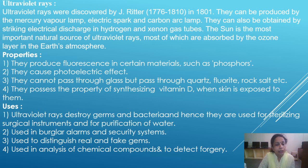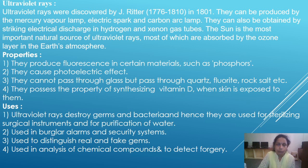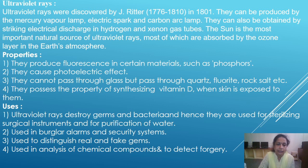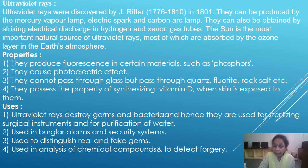Uses of ultraviolet rays: First, ultraviolet rays destroy germs and bacteria, and hence they are used for sterilizing surgical instruments and for purification of water. Second, they are used to secure valuable things. Third, they are used to distinguish real and fake gemstones. Fourth, they are used in analysis of chemical compounds and to detect forgery.